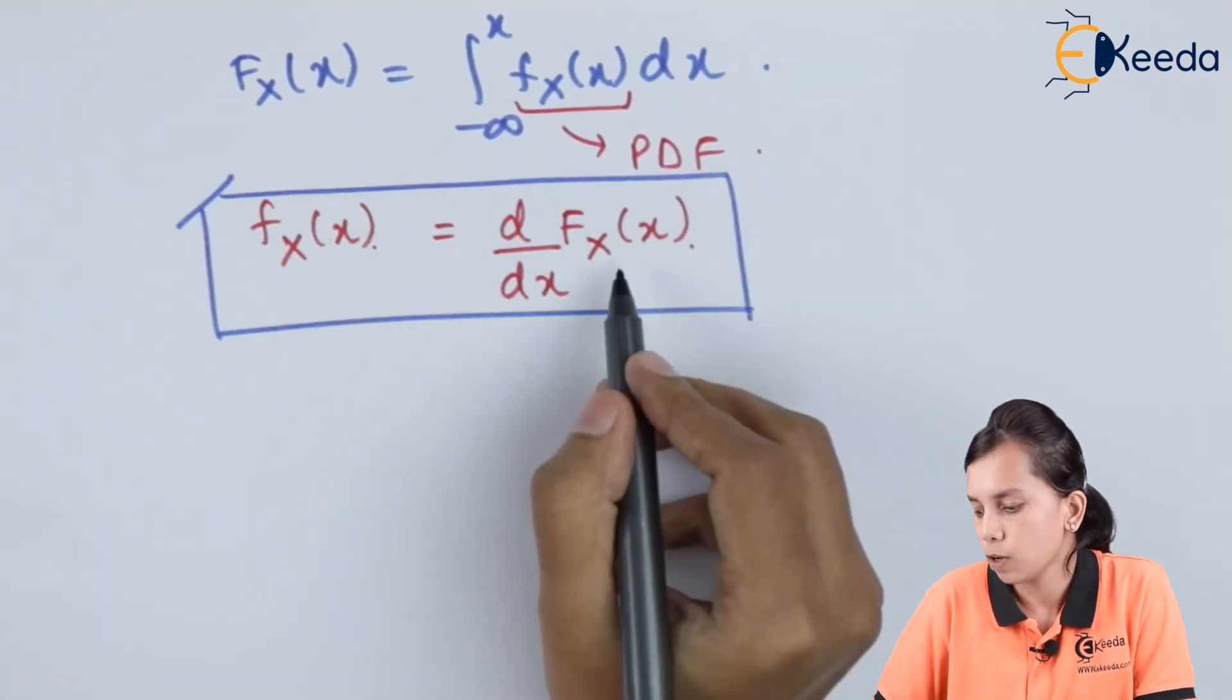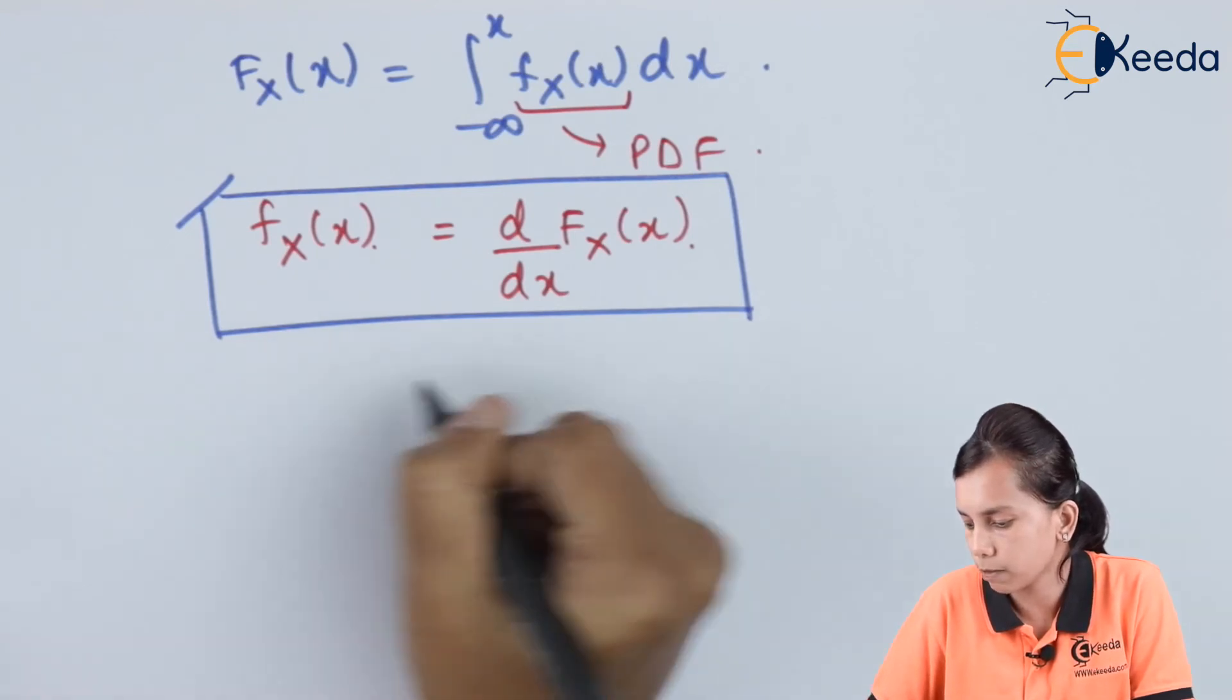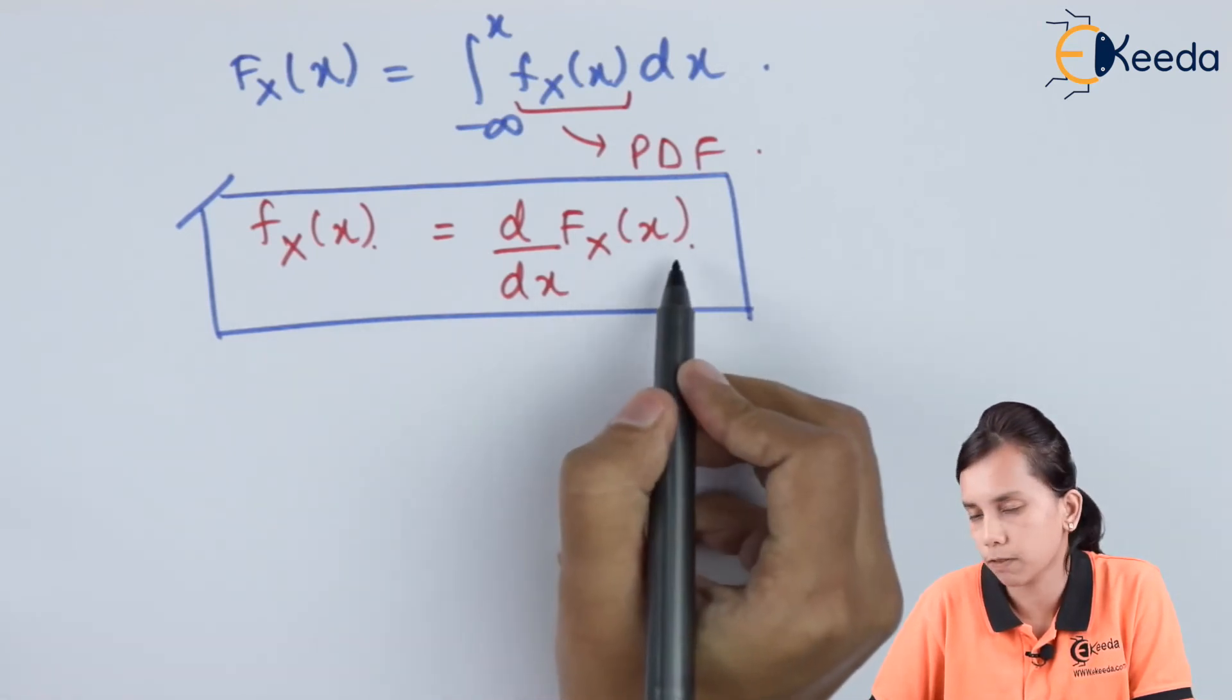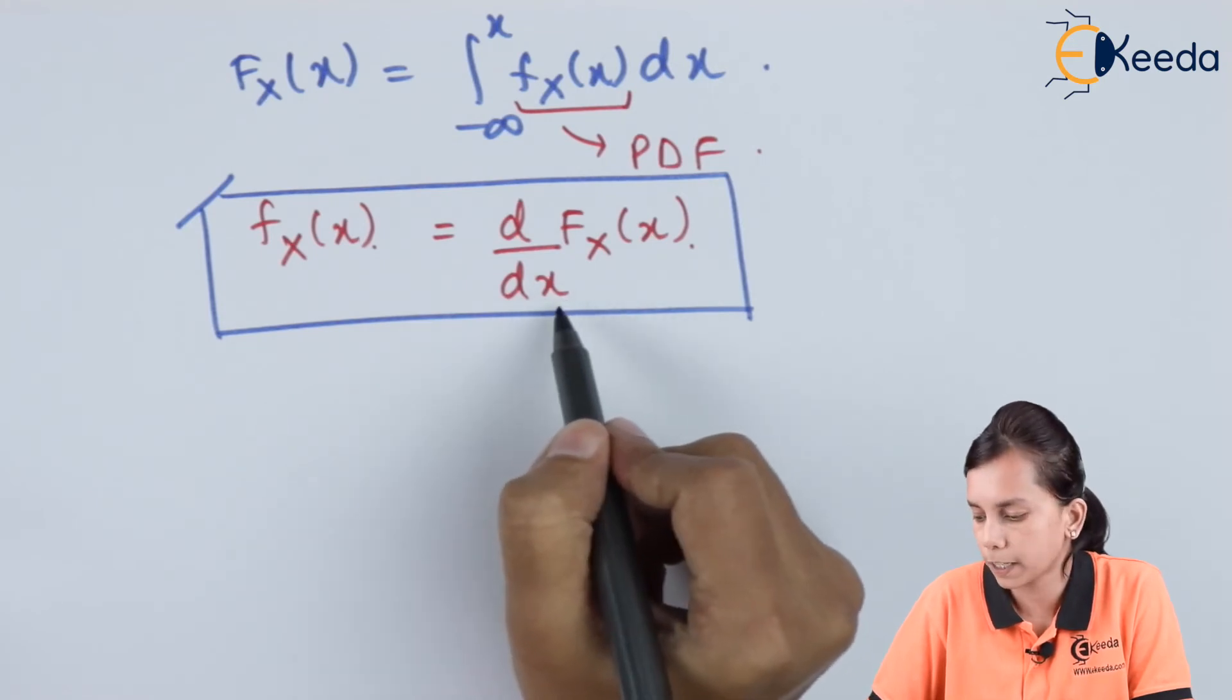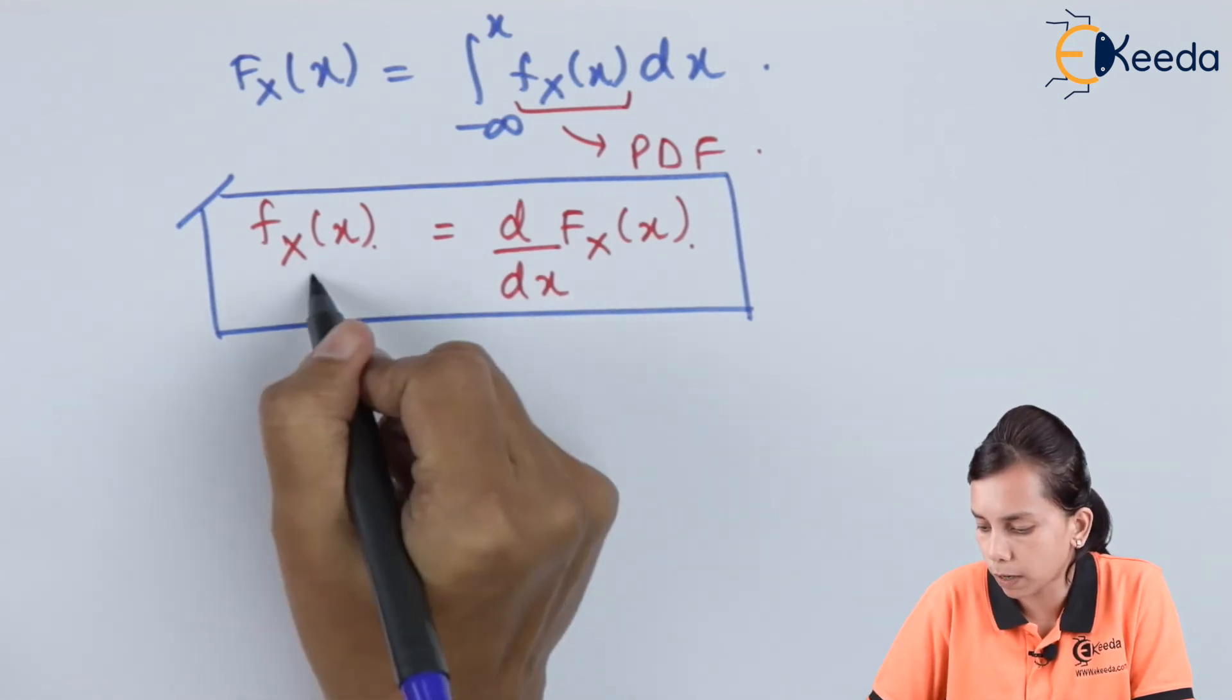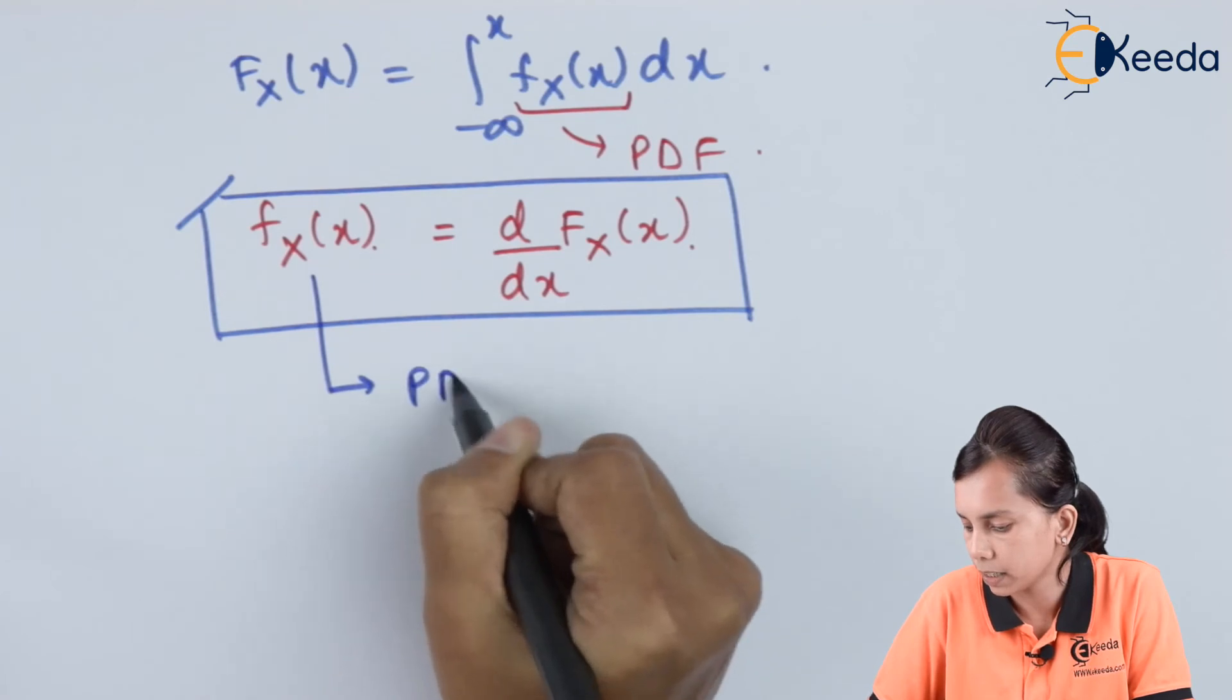It means that whenever CDF is given, F_X(x) is given, just by differentiating that function with respect to x, we can find out the value of PDF.